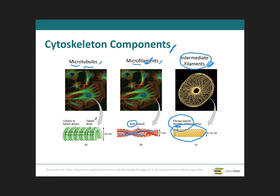To summarize, intermediate filaments are important for cell junctions, which is what we're covering in this learning outcome. The other two cytoskeleton components — microtubules and microfilaments — are important for plasma membrane extensions, which are the cilia, the flagellum, and the microvilli.